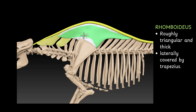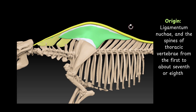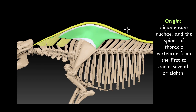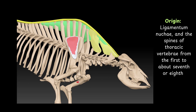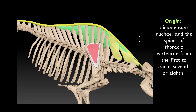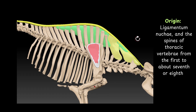It is a roughly triangular and thick muscle. Origin of the muscle: the muscle originates from ligamentum nuchae — this is the ligamentum nuchae — and from the spines of the thoracic vertebrae, from first to about seventh or eighth. To show this I am rotating to that side, so from this side you can clearly see the origin point.